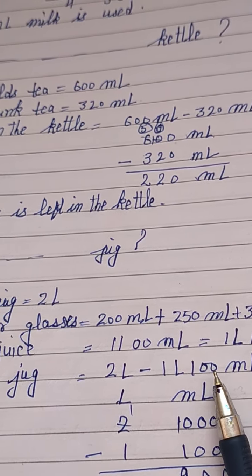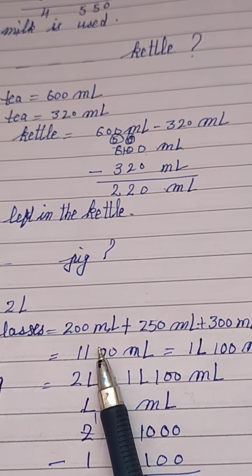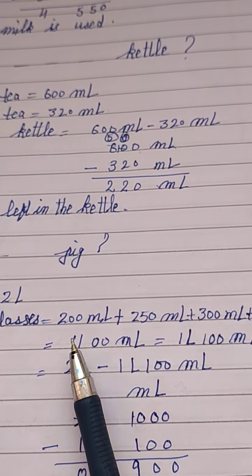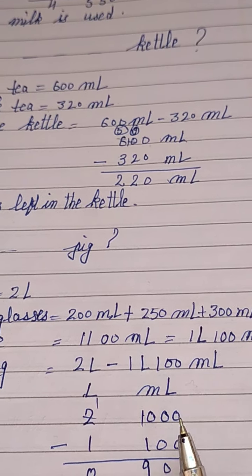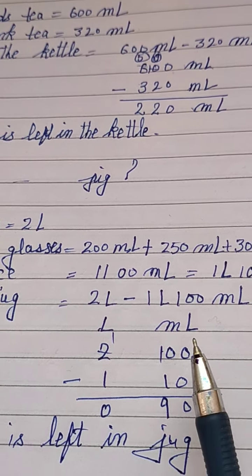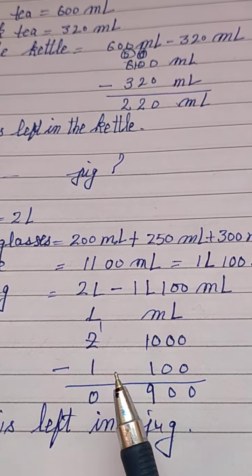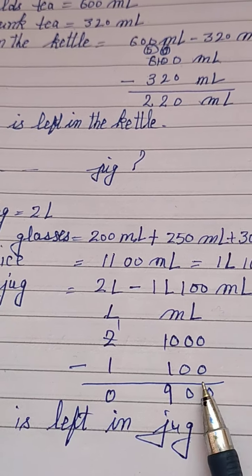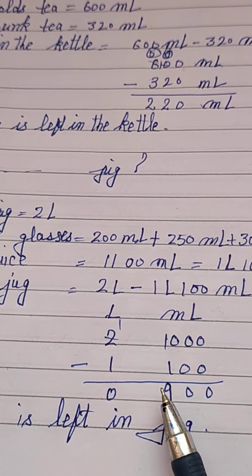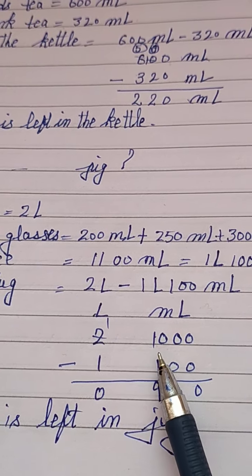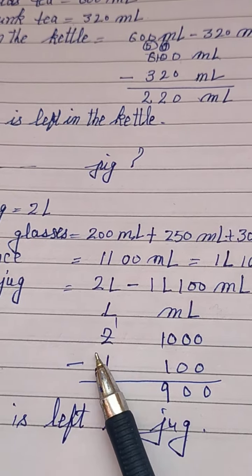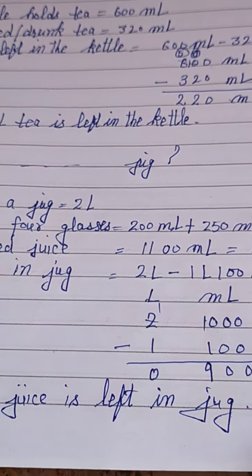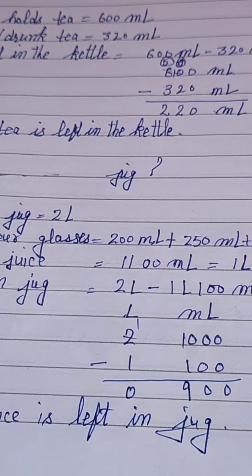The juice left in the jug will be 2 litres minus 1 litre 100 millilitres. We write: 2 litres 000 millilitres minus 1 litre 100 millilitres. 0 minus 0 is 0, 0 minus 0 is 0, and 0 minus 1 is not possible — take a borrow from 2, then here is 10 minus 1 is 9, and 1 minus 1 is 0. So 900 millilitres of juice is left in the jug.